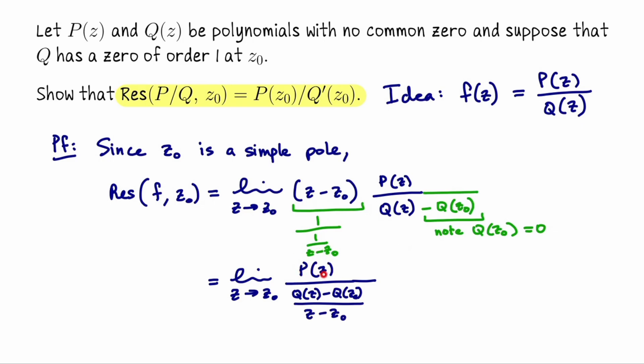P is a polynomial, it's continuous, the limit as z approaches z₀ for the numerator is P of z₀. Similarly Q is a polynomial, it's differentiable, and since z₀ is a zero of order 1, this derivative is going to exist and be non-zero. So the numerator goes to P of z₀ and the denominator goes to Q prime of z₀, and we're done. So this limit goes to P of z₀ over Q prime of z₀.